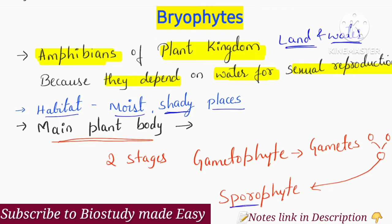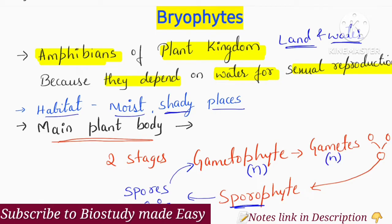The sporophyte is produced by spores and is developed from the gametophyte. The gametophyte is haploid — it has half the number of chromosomes. This haploid gametophyte produces a diploid zygote, which forms the sporophyte. So the sporophyte is diploid.